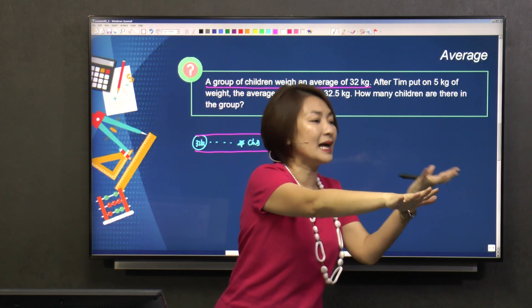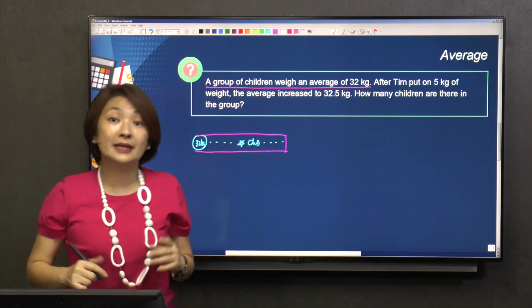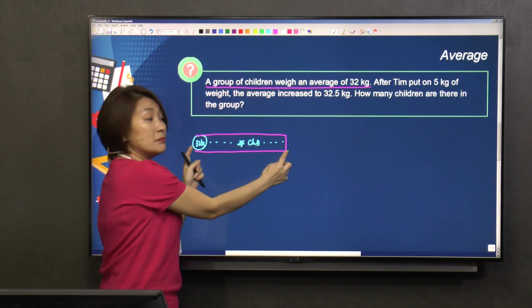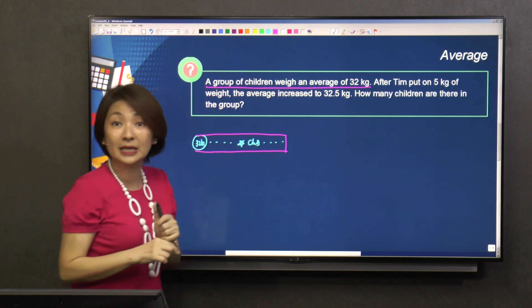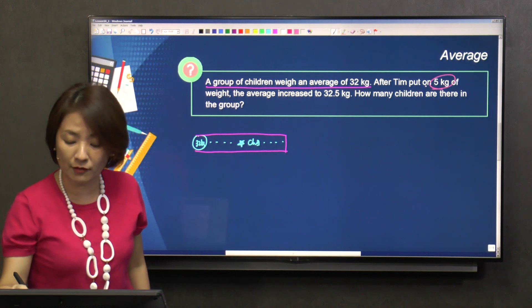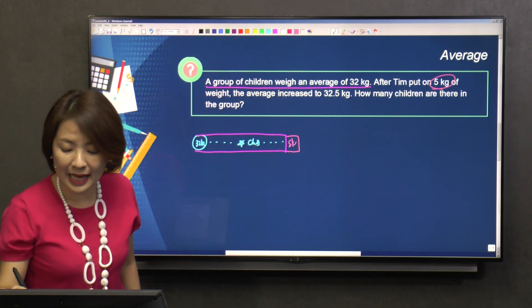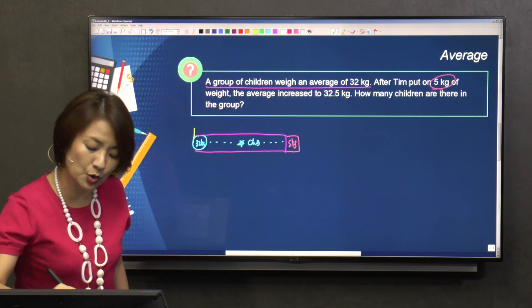And then, what happens is, I take a 5 kilogram weight and I put on top of Tim. Then what will happen to my total? My total will increase. By how much? By 5. This 5 kilogram of Tim, I will actually have to add on here. So now this becomes the new total.